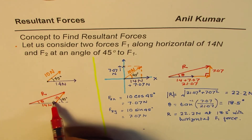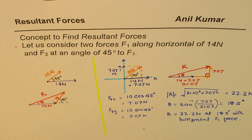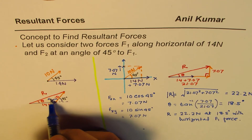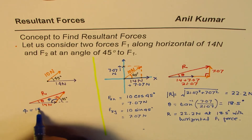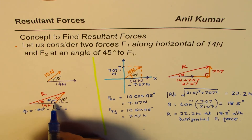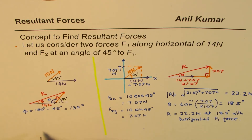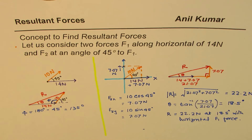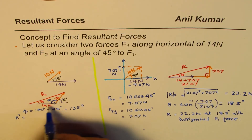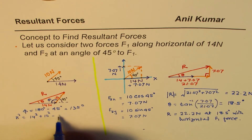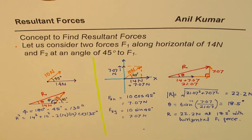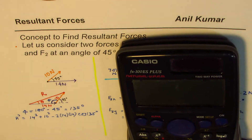Since we know two sides and the included angle, we can apply the cosine law. The angle inside the triangle — let's call it phi — equals 180 minus 45 degrees, which is 135 degrees. So R squared equals 14 squared plus 10 squared minus 2 times 14 times 10 times cos 135 degrees.